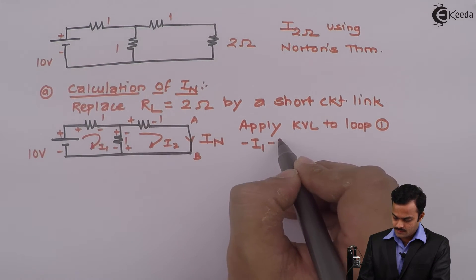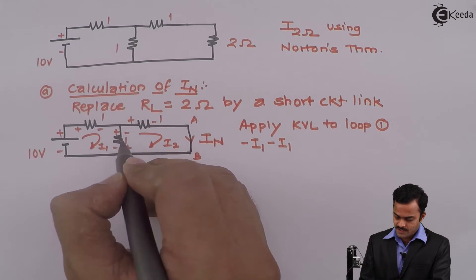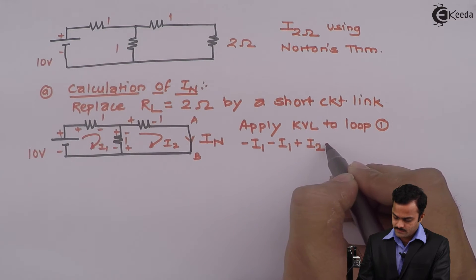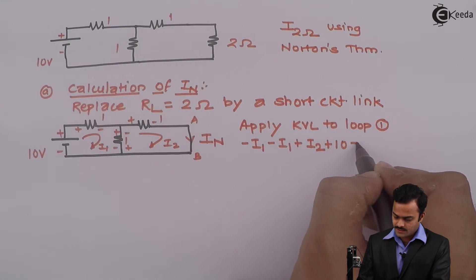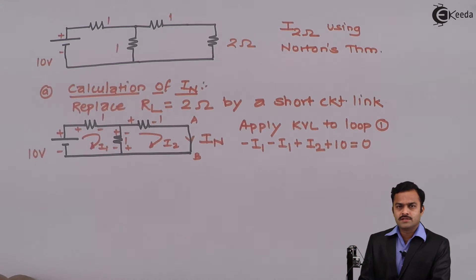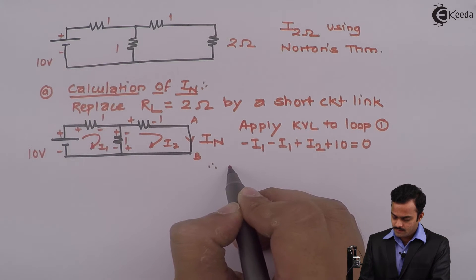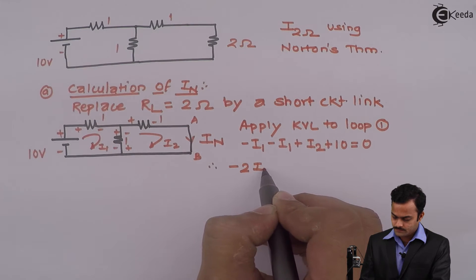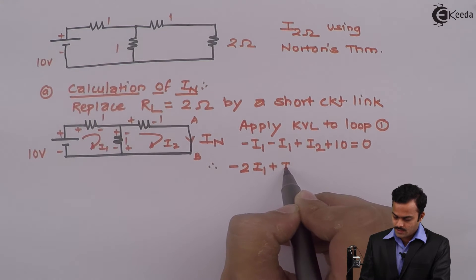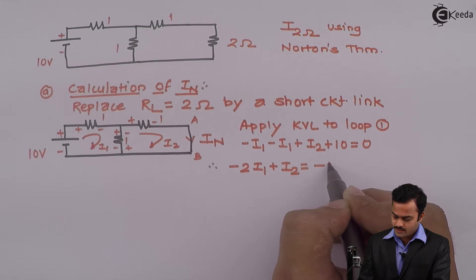And minus plus which is 10, plus 10 equal to 0. So if I rearrange the terms I will get minus 2 I1 plus I2 equal to minus 10, equation number 1.